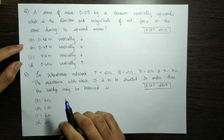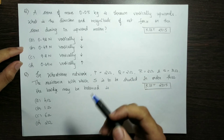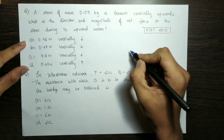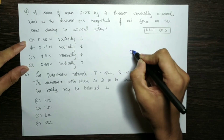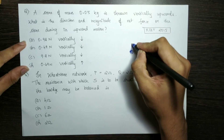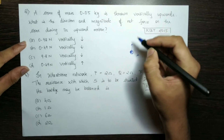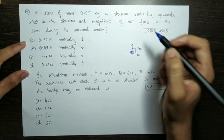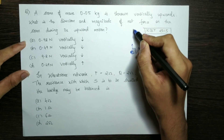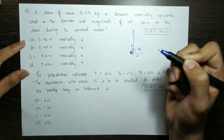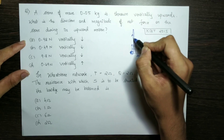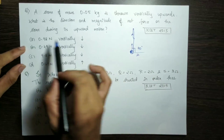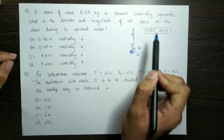A stone of mass 0.05 kg is thrown vertically upwards. What is the direction and magnitude of the net force on the stone during its upward motion? The velocity is u, the angle with respect to the horizontal is 90 degrees. If you go to the highest point, you reach the highest point. In this duration, what is the direction and magnitude of the net force?